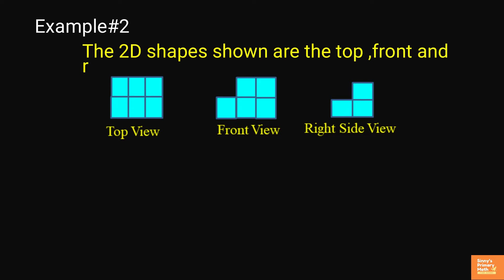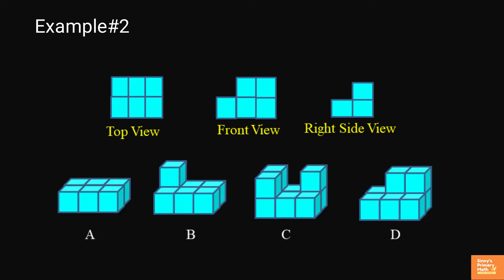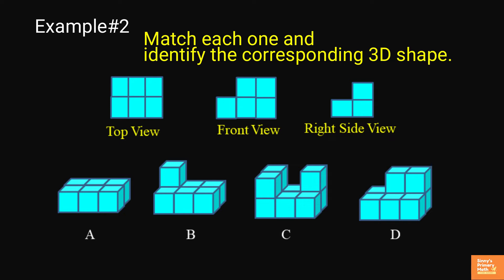Example 2. The 2D shapes shown are the top, front and right side views of a 3D shape. Match each one and identify the corresponding 3D shape.